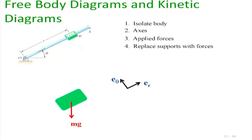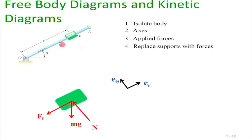The forces on the sleeve include mg and all support forces. There is friction — the sleeve has a tendency to slip outwards (r keeps increasing), so the frictional force acts inwards to resist that motion. We also have a normal reaction. This gives us the complete free body diagram for the sleeve.